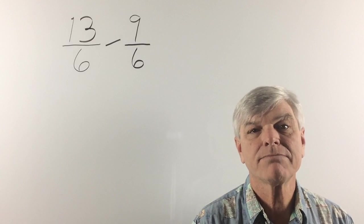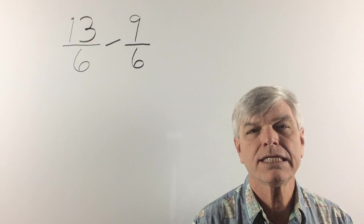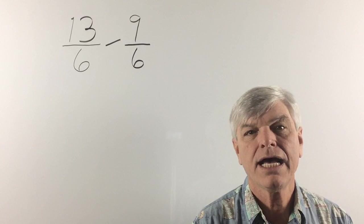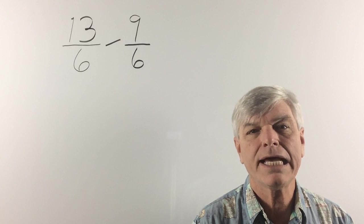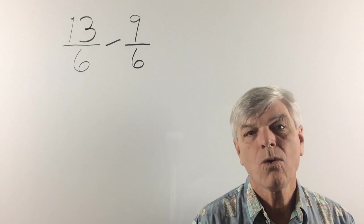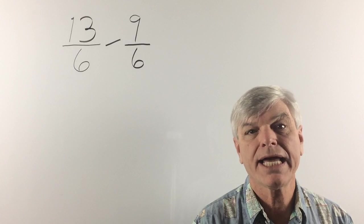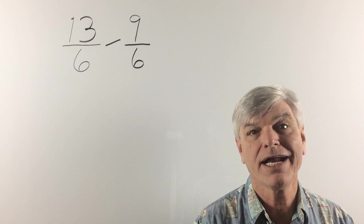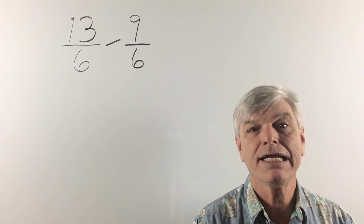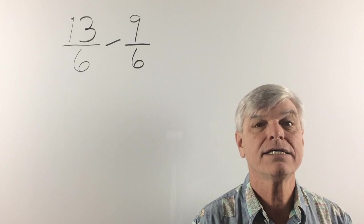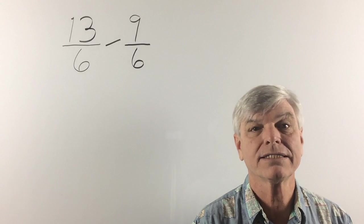We have 13 sixths minus 9 sixths. And if you look at the negative sign, you can see that I put that at a slight slant. I do that so that the negative sign does not blend into the fraction bars. Or if you're working on lined paper, I can't tell you how many times I've seen a negative sign on the line and nobody sees it and you get the answer wrong. So, 13 sixths minus 9 sixths. Again, we are subtracting across with the numerator, not the denominator.